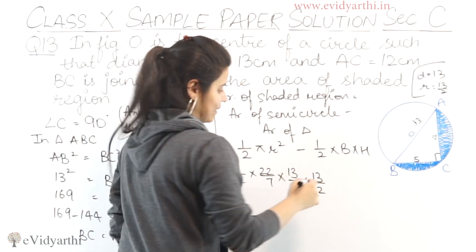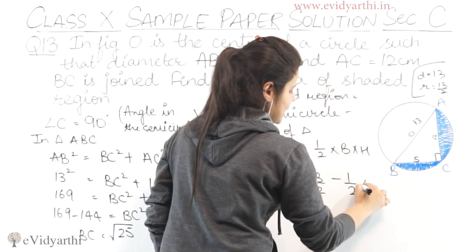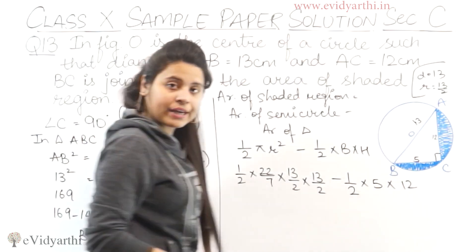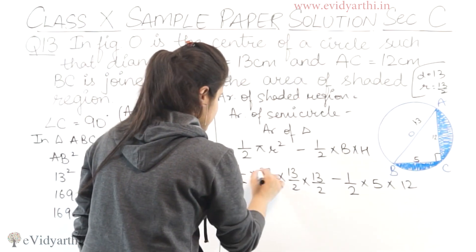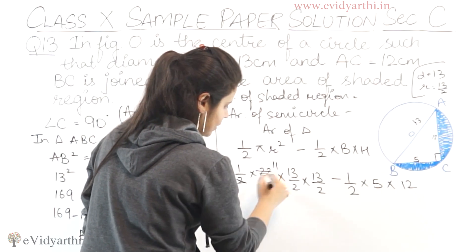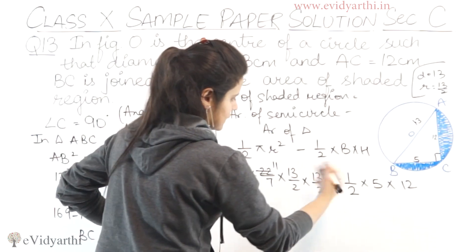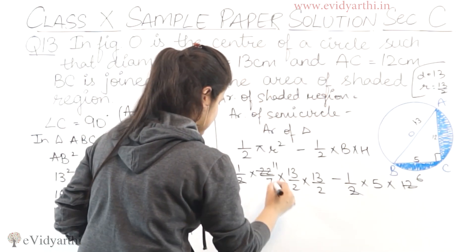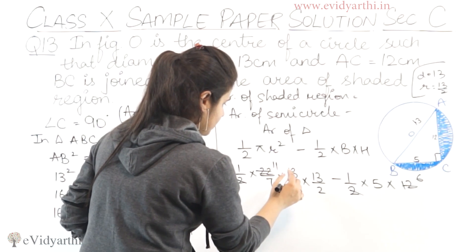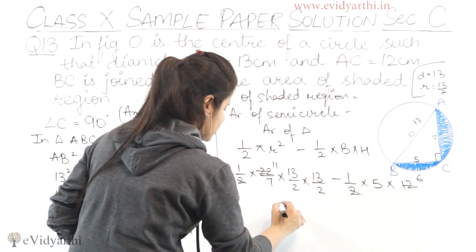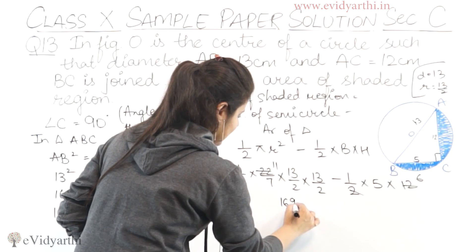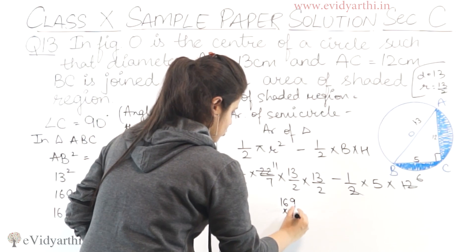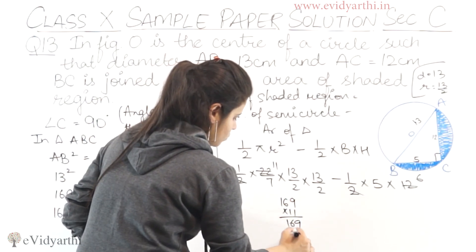So we have (1/2) × (22/7) × (13/2)² minus (1/2) × 5 × 12. Now solving this: we can cancel 2, giving us 11 on one side. On the other side, canceling 2 gives us 6.